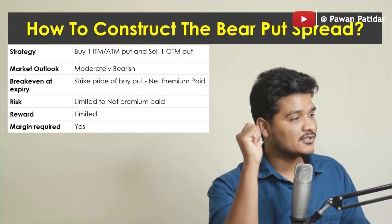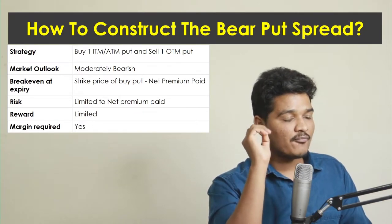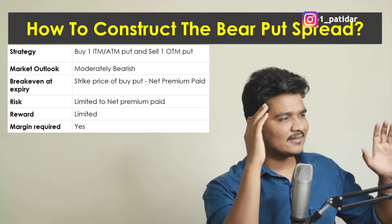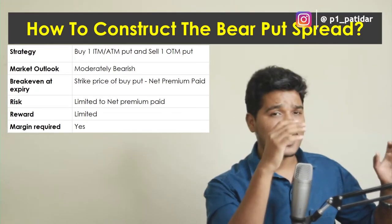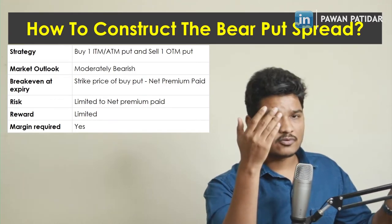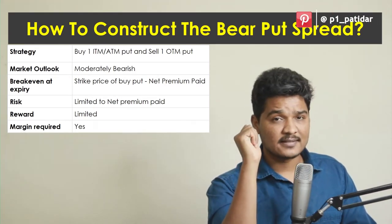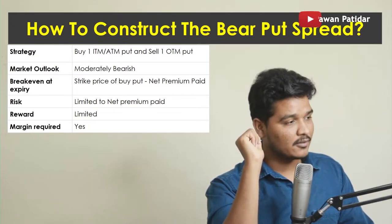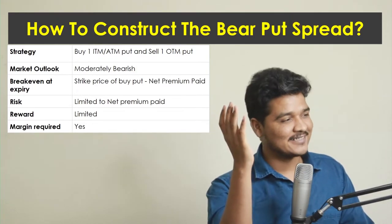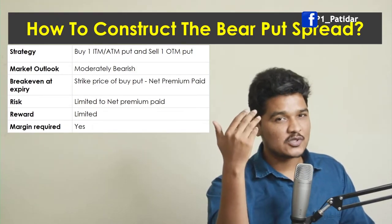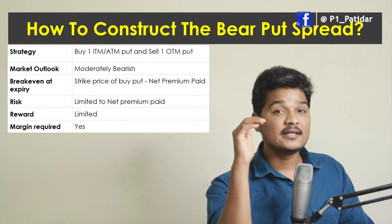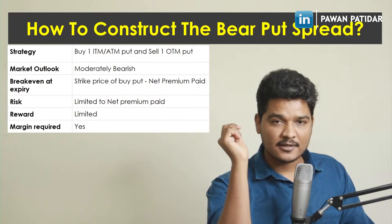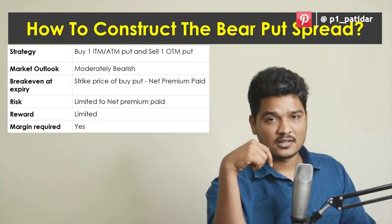The break-even point is: strike price of the bought put minus the net premium paid. Risk is limited and equals the net premium paid. Rewards are also limited — I'll show you how much reward you get in the current market example. Since you are selling an option, some margin will be required.